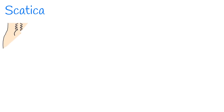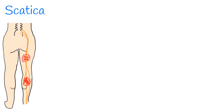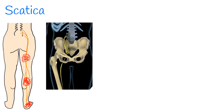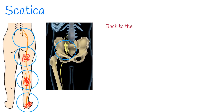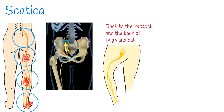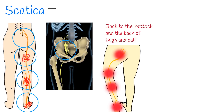Sciatica is one of the most common nerve-related disorders. It causes leg pain that radiates from your lower back to your buttock and down the back of your leg — this is the hallmark of sciatica. You might feel the discomfort almost anywhere along the whole leg, but it is especially prominent on the back of the buttock and the back of the thigh and calf.